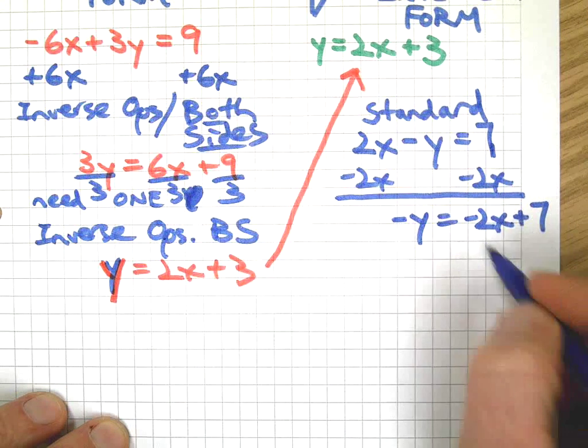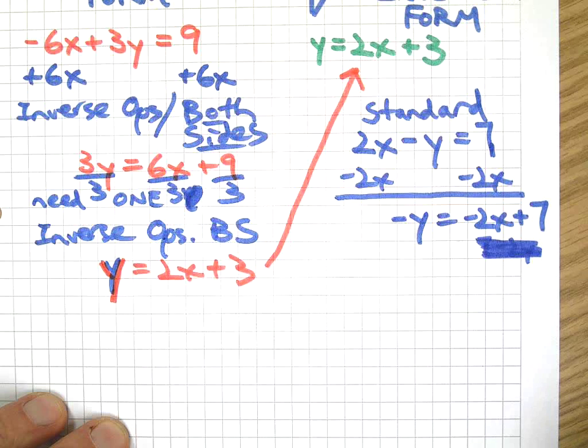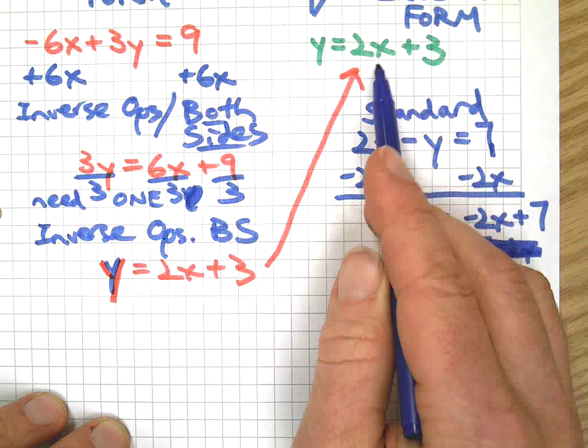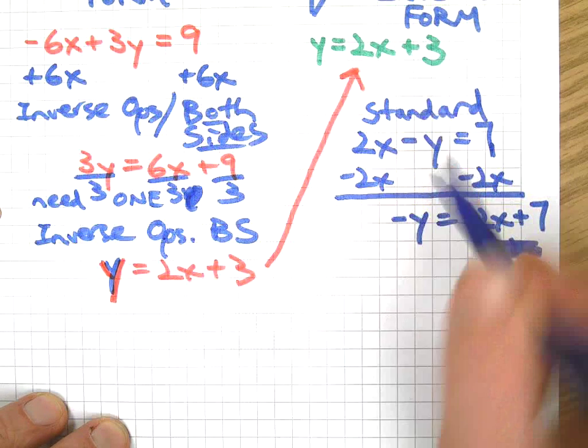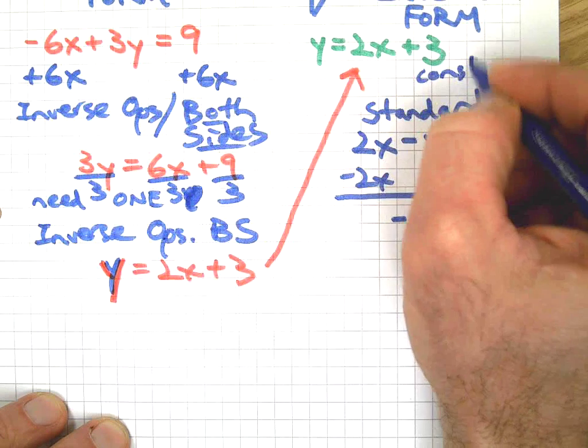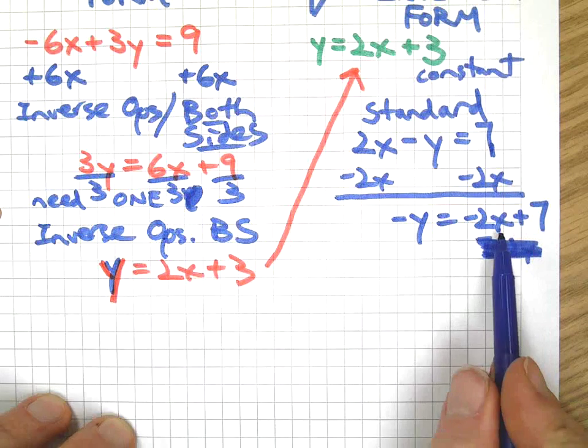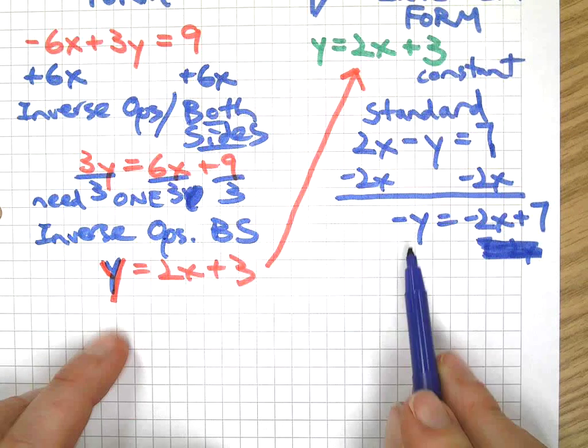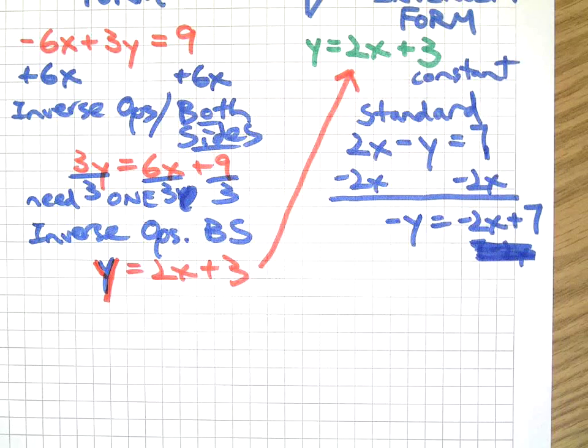There we go. I could write 7 minus 2x, it really doesn't matter, but since I know slope-intercept form is going to have the variable and the coefficient first followed by the constant or the y-intercept, I might as well put it in that order right away. Now you might think you're done, but you are not.